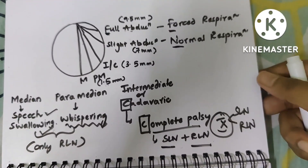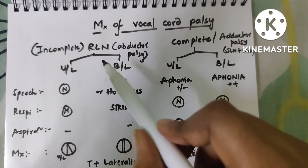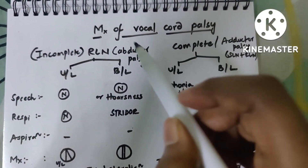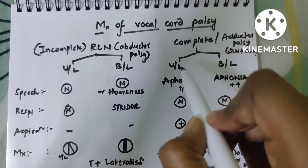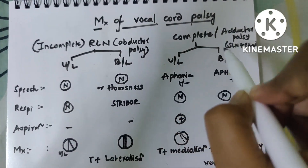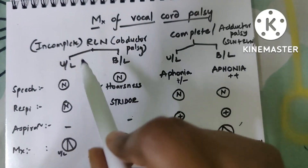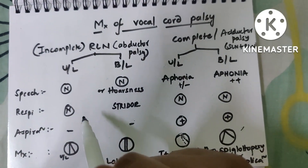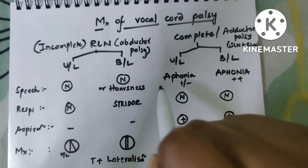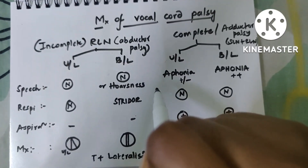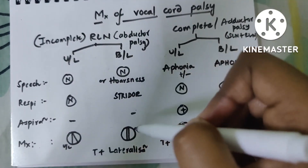Vocal cord palsy is divided into RLN palsy and complete palsy. RLN palsy is divided into unilateral and bilateral recurrent, and complete palsy into unilateral complete and bilateral complete. RLN palsy is otherwise called incomplete palsy because only abductor fibers are affected, whereas complete palsy involving both SLN and RLN is called adductor palsy.